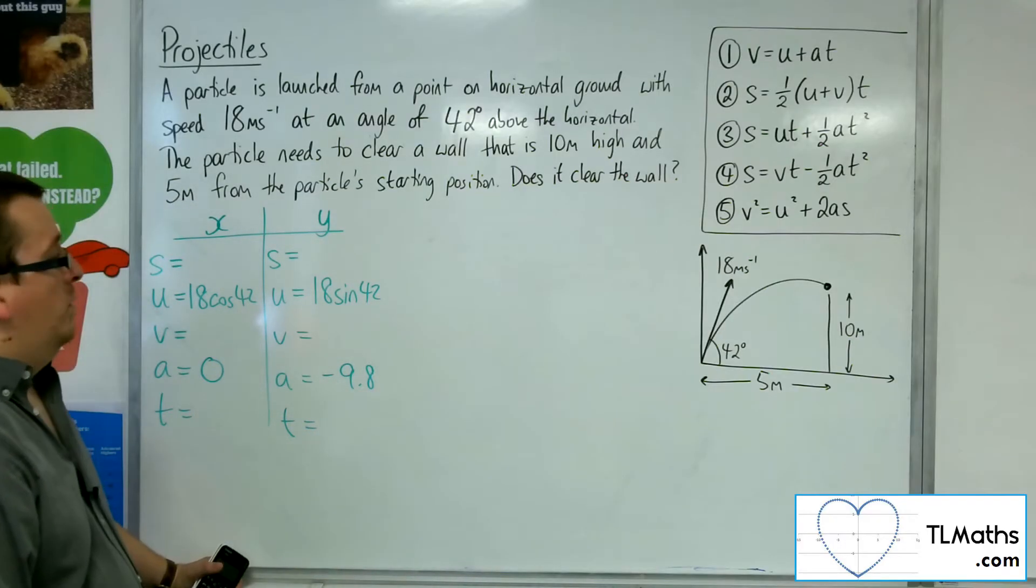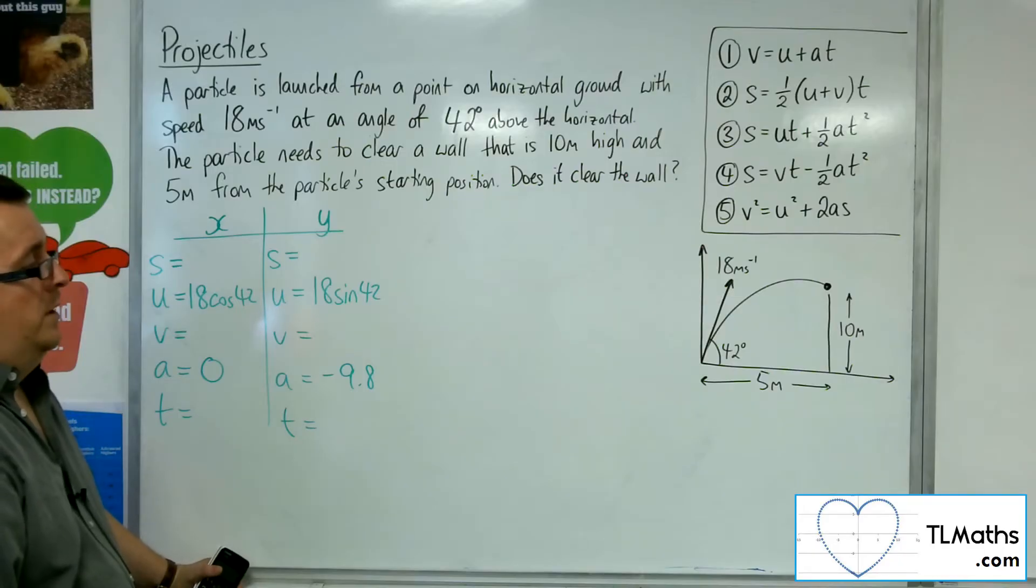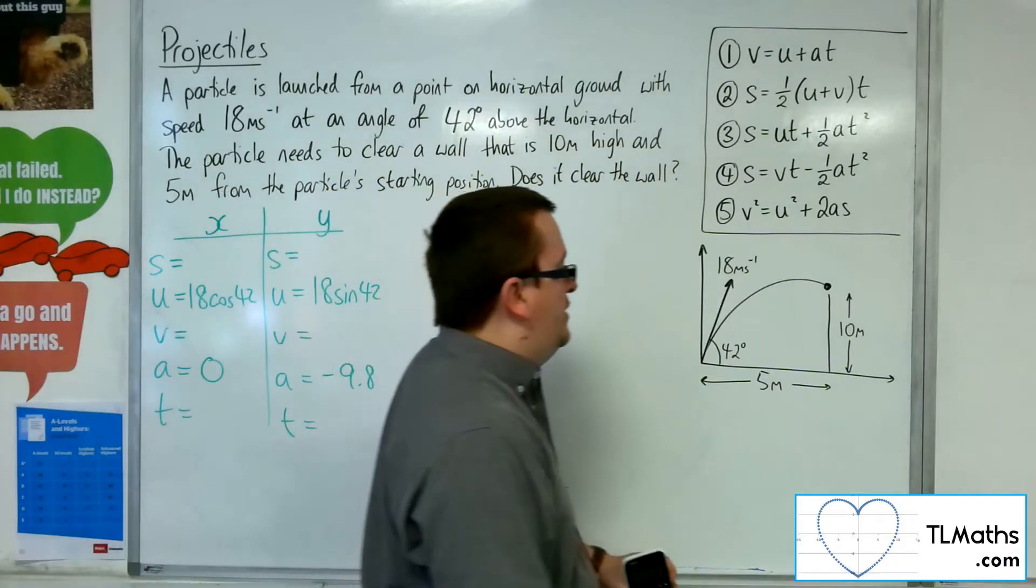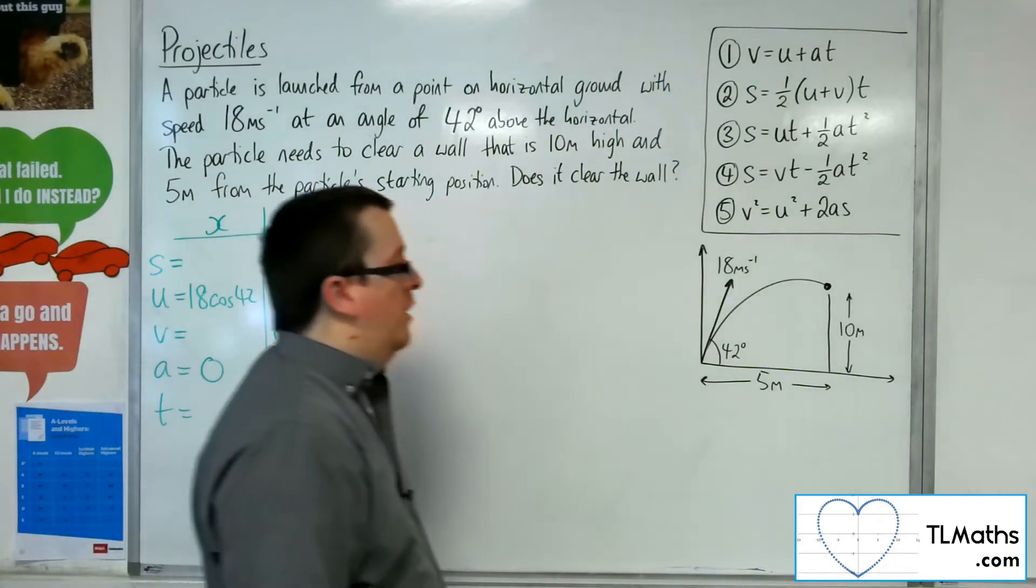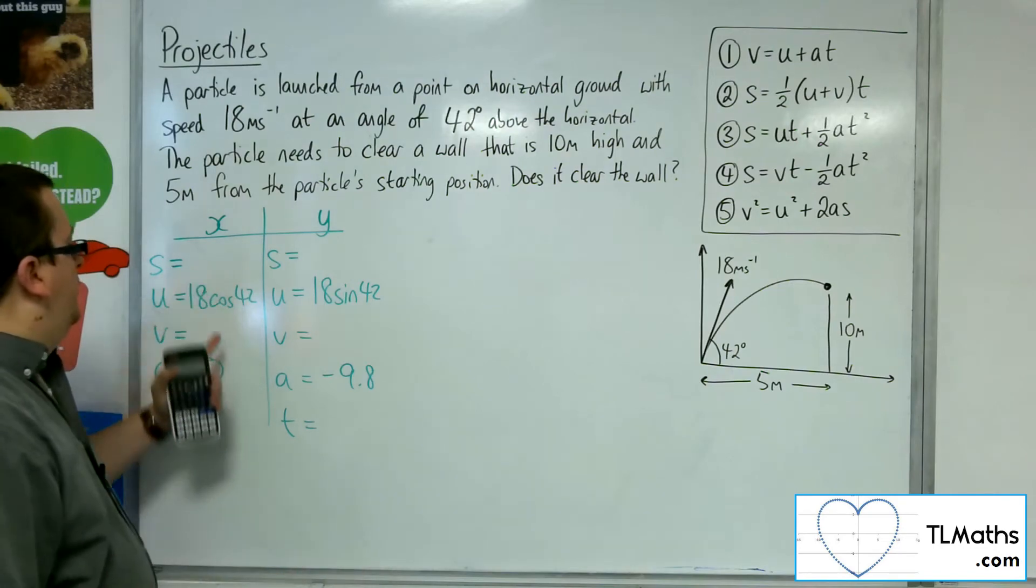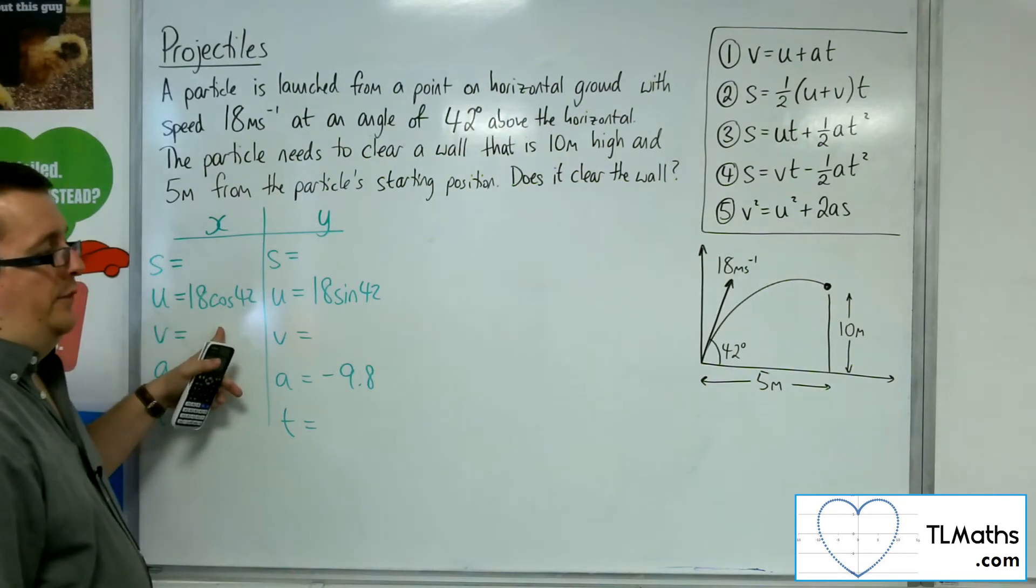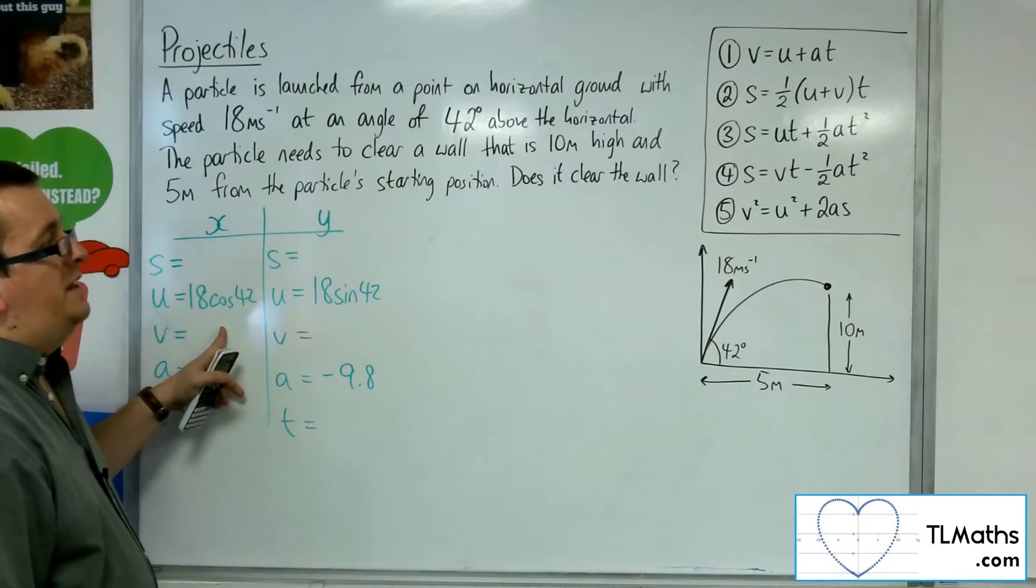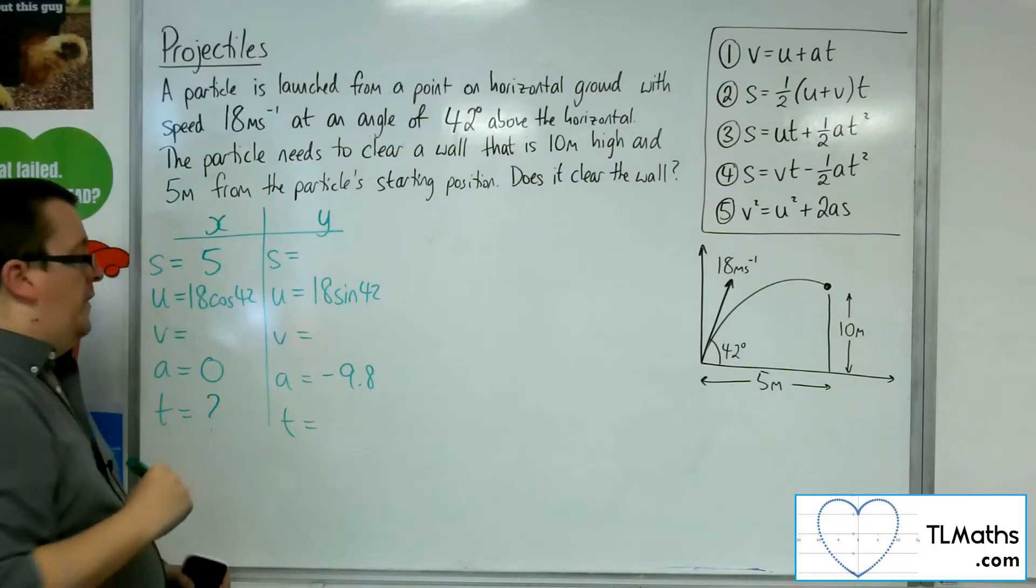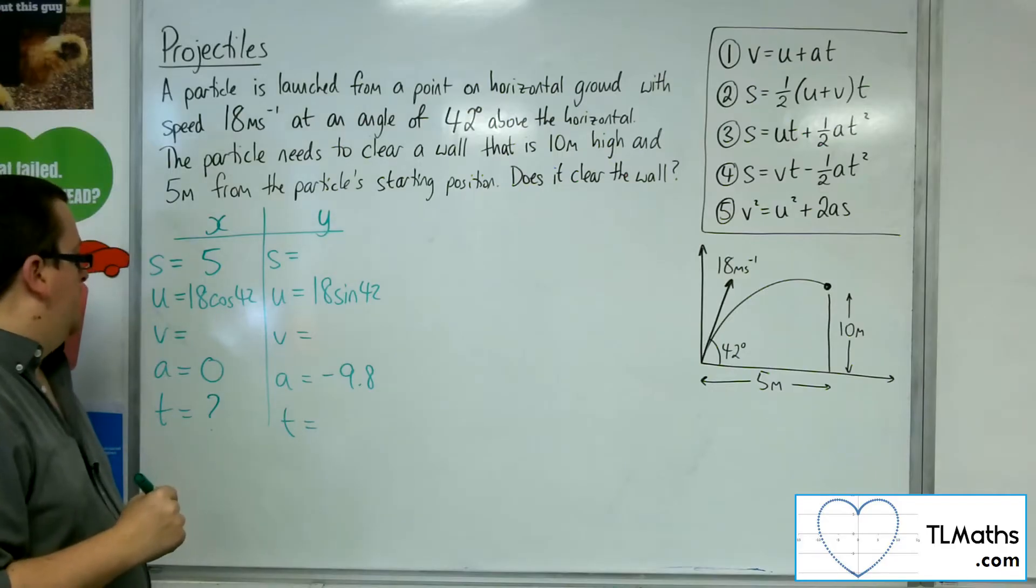So what am I going to need to find? I really need to find the time that it takes in order to get 5 metres along horizontally. So if I use the horizontal side here and put the displacement as equal to 5, I should be able to find the time for that to happen.